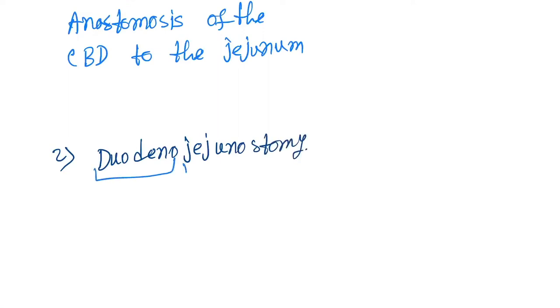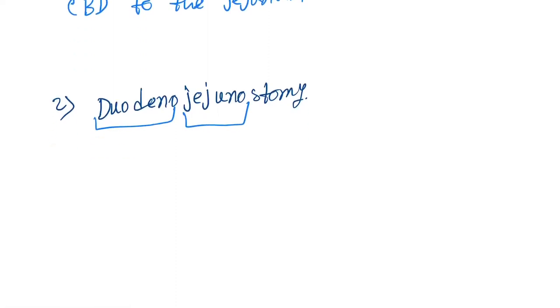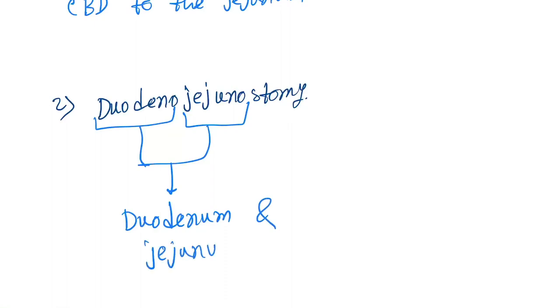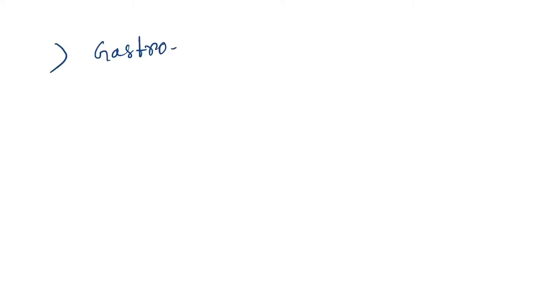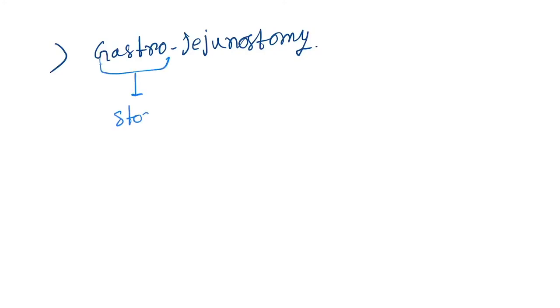The second type is duodenojejunostomy, which is an anastomosis between the duodenum and the jejunum. The third type is gastrojejunostomy, which is anastomosis of the stomach and the jejunum.